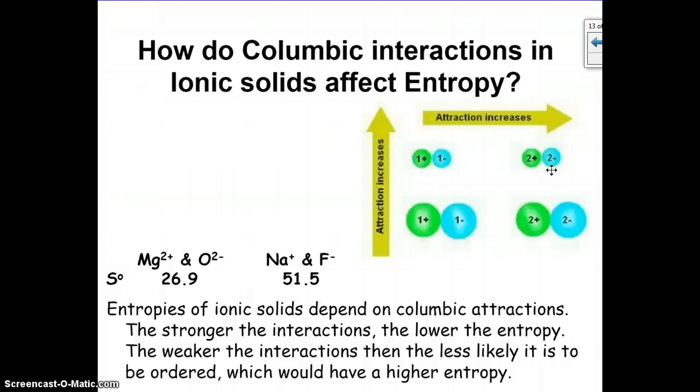And the other thing that affects entropy in an ionic solid is the size of the ions. So the smaller the ions, the closer those two nuclei can get to one another, which means the stronger the attraction, lower the entropy. So if you have a higher charge or a smaller ion, then you have lower entropy because the interaction between the positives and negatives is stronger, so it's less random.